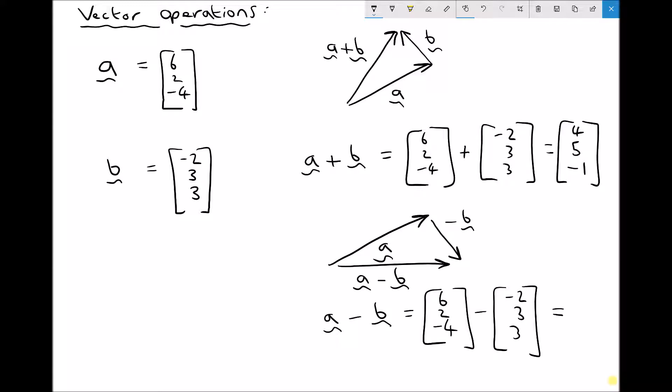And all we do is take each of those components independently. So we have 6 minus minus 2 or 6 plus 2 which is 8. We have 2 minus 3 which is minus 1. And we have minus 4 minus 3 which is minus 7.